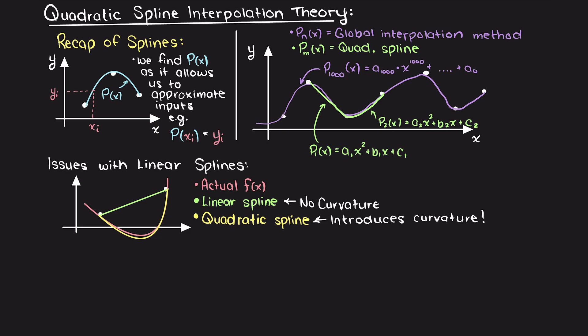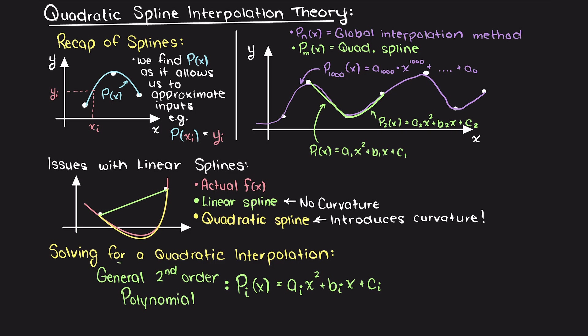Essentially, with quadratic spline interpolation, we are going to be increasing our interpolating polynomial's function order by 1. Instead of using first order polynomials to find our interpolating functions, we are now going to be using second order polynomials. In terms of our data points, that will look something like this. But how do we go about finding the quadratic interpolating function itself?